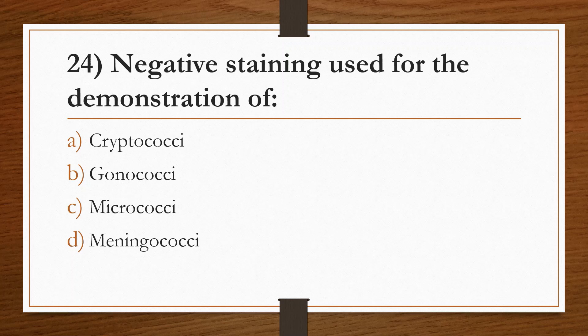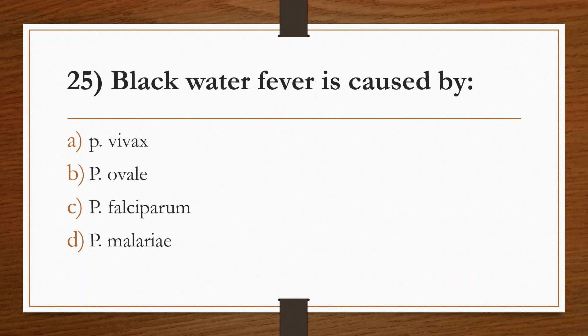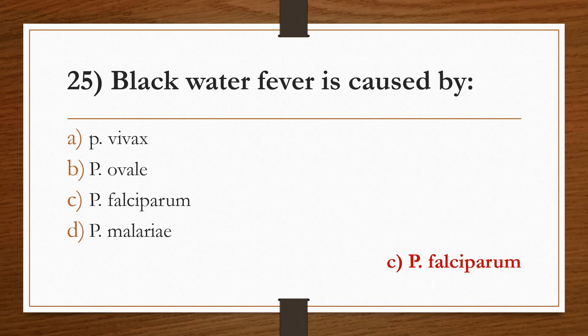Twenty-fourth question: negative staining is used for the demonstration of Option A: Cryptococcus. Option B: Gonococcus. Option C: Micrococcus. Option D: Meningococcus. Answer is Option A, Cryptococcus. Twenty-fifth question: blackwater fever is caused by Option A: Plasmodium vivax. Option B: Plasmodium ovale. Option C: Plasmodium falciparum. Option D: Plasmodium malariae. Answer is Option C, Plasmodium falciparum.